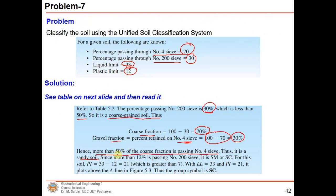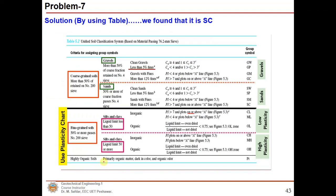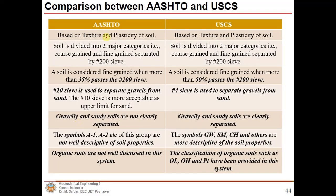Since more than 12 percent passes the No. 200 sieve, this is a sand with fines (silty sand or clayey sand). The plasticity index is 12, which is greater than 7, and the liquid limit is 33, so from the plasticity chart this plots above the A-line, indicating a clayey sand (SC). The fine content is more than 12 percent and PI is greater than 7, confirming the clay-silt classification for the fines.